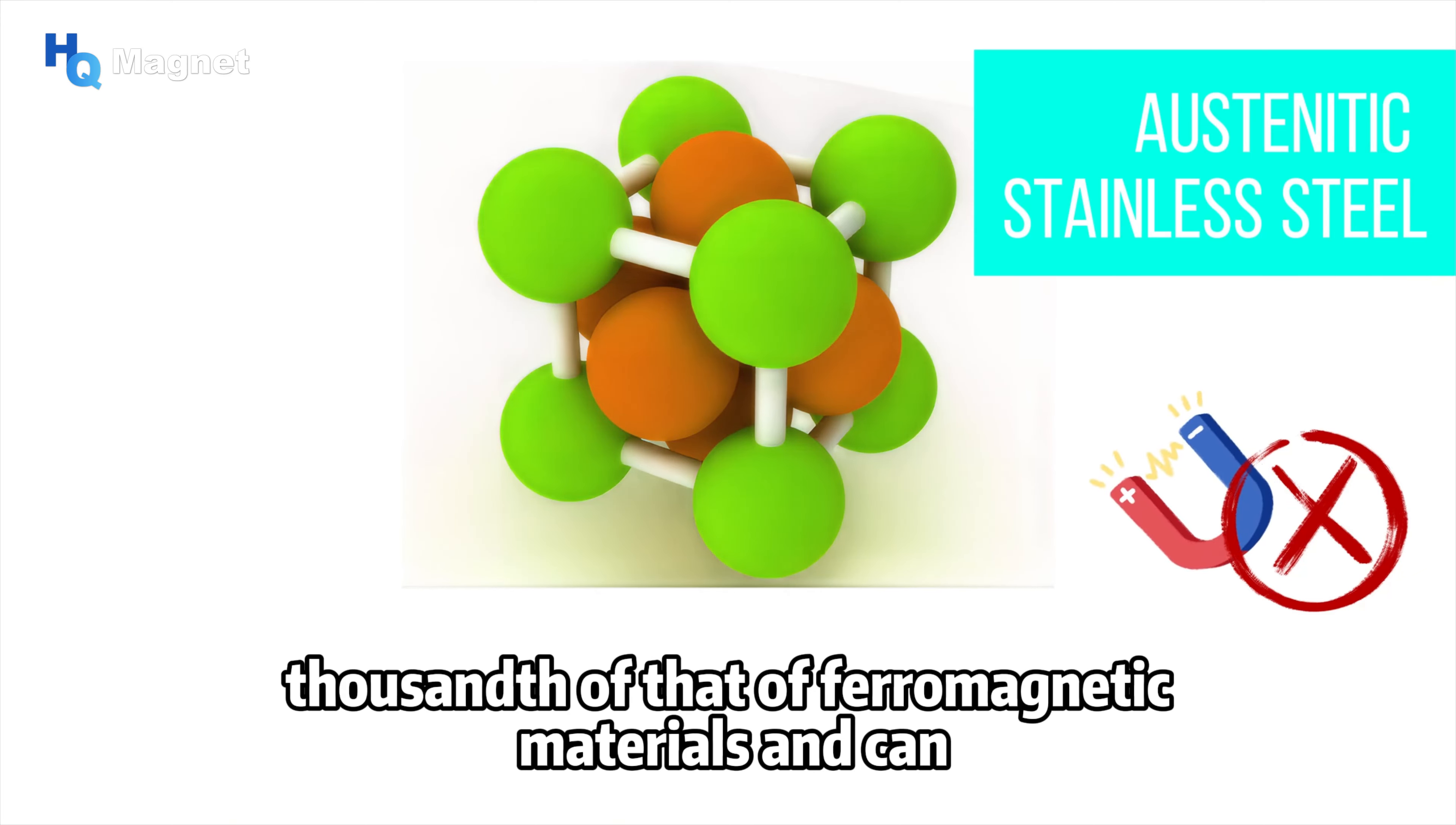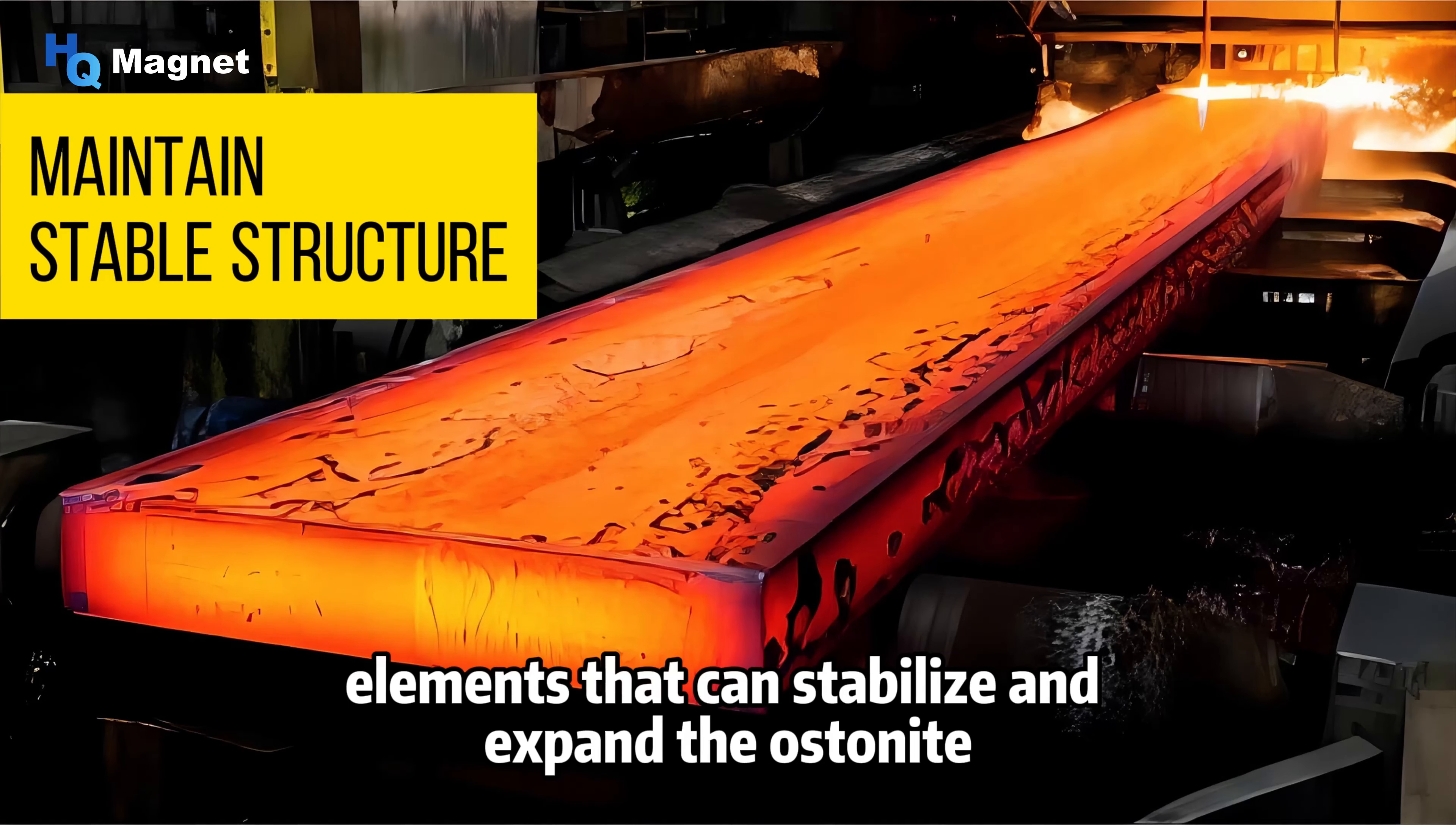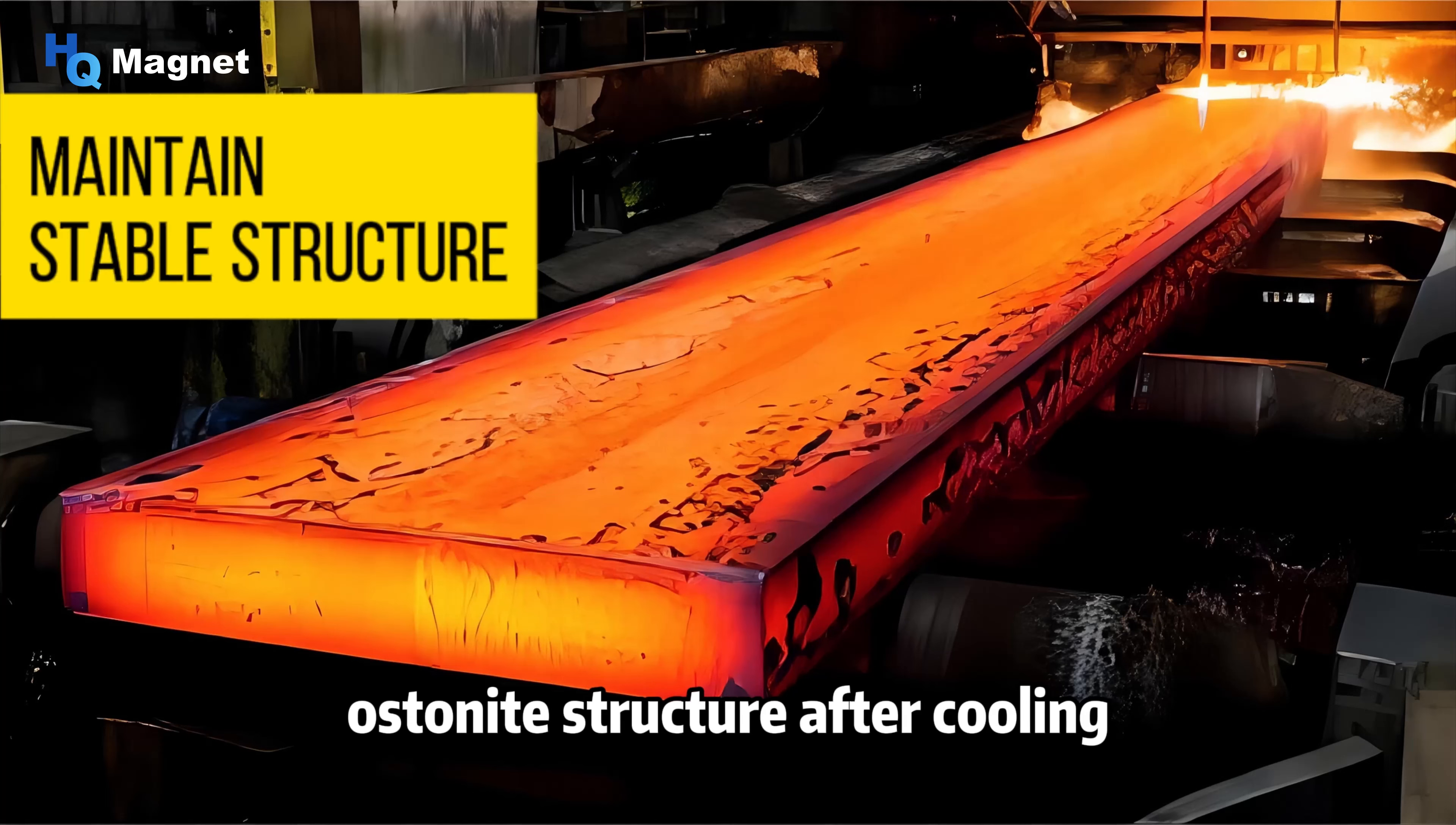When the temperature drops, austenite will turn back into ferrite. We can add a sufficient amount of chemical elements that can stabilize and expand the austenite phase region, such as nickel and manganese, to the steel, thus achieving a stable austenite structure after cooling.